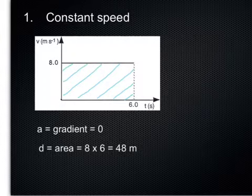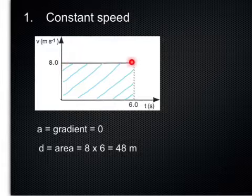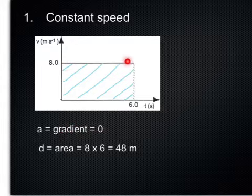The first type is constant speed. The speed stays at 8 meters per second. The acceleration is zero because the gradient is zero. There's no gradient.